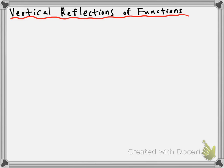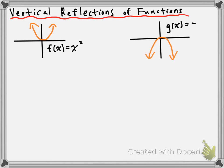You talked about vertical reflections last year when you dealt with parabolas. For example, if we have a parent function f of x is equal to x squared — that's our parent parabola — then we know that we can vertically reflect that, and the vertical reflection of that parabola would look something like that. It would have the equation g of x is equal to negative x squared.